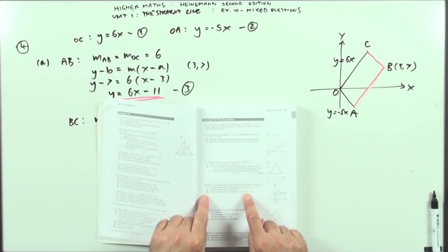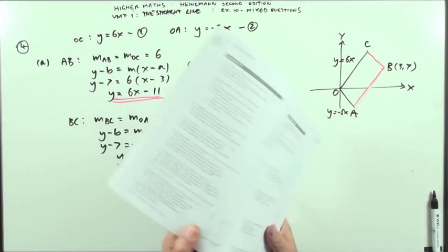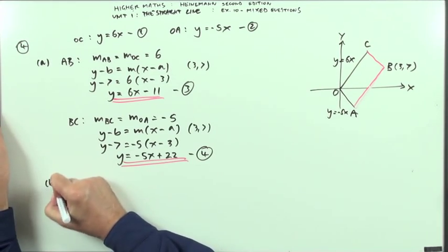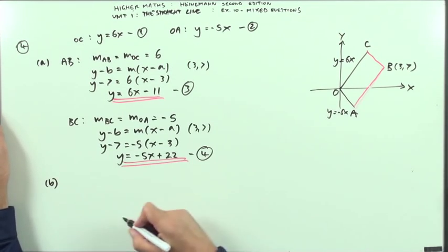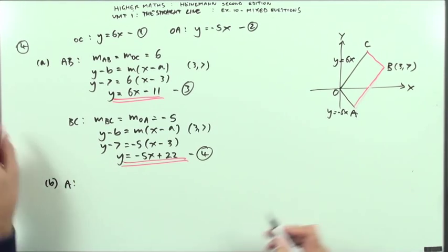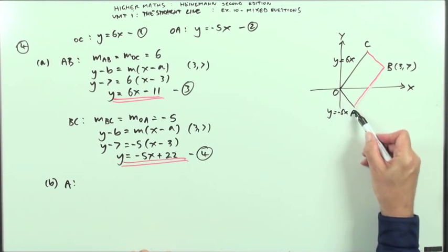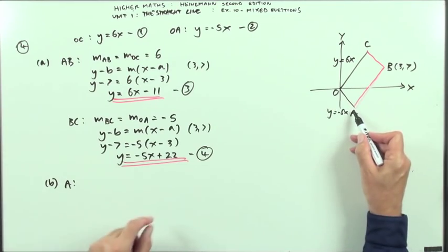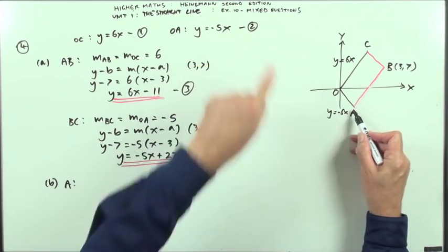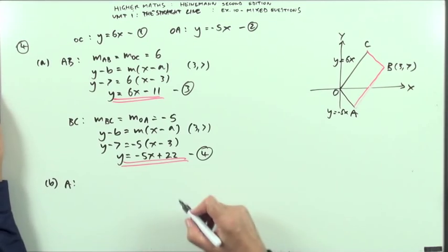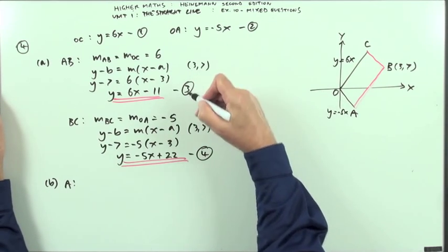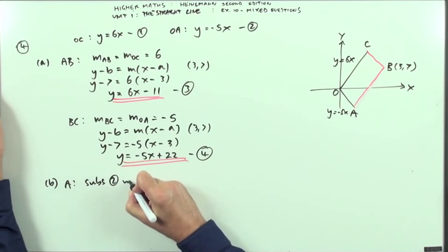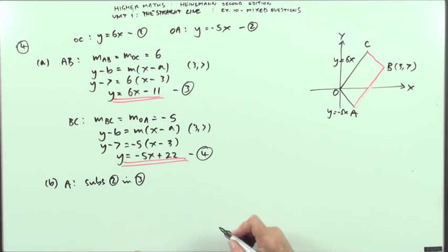Part B: determine the coordinates of A and C. To get the point A that's the intersection of the lines OA and AB, so that means I'm going to substitute equation 2 into 3, those being the lines that cross there.